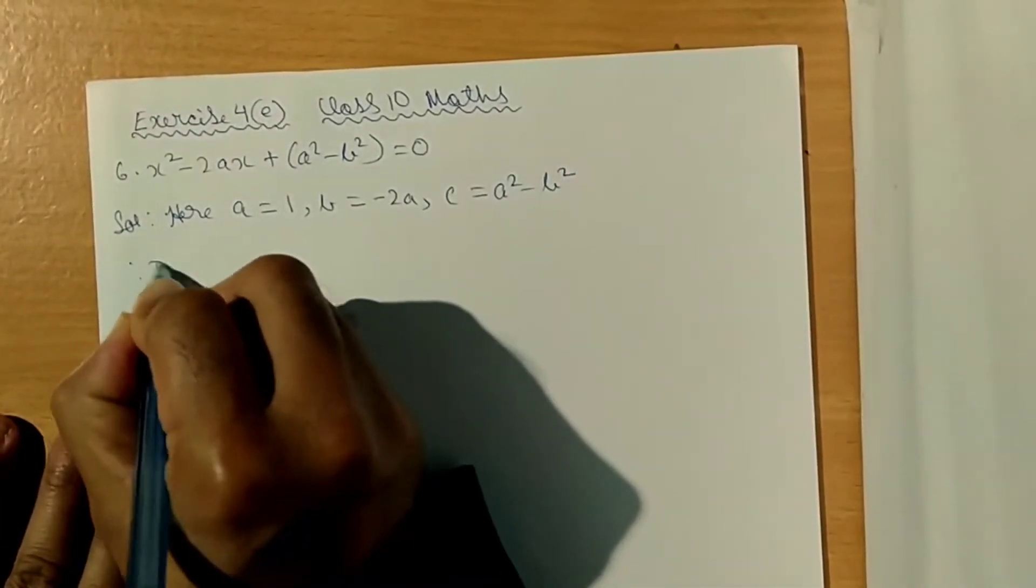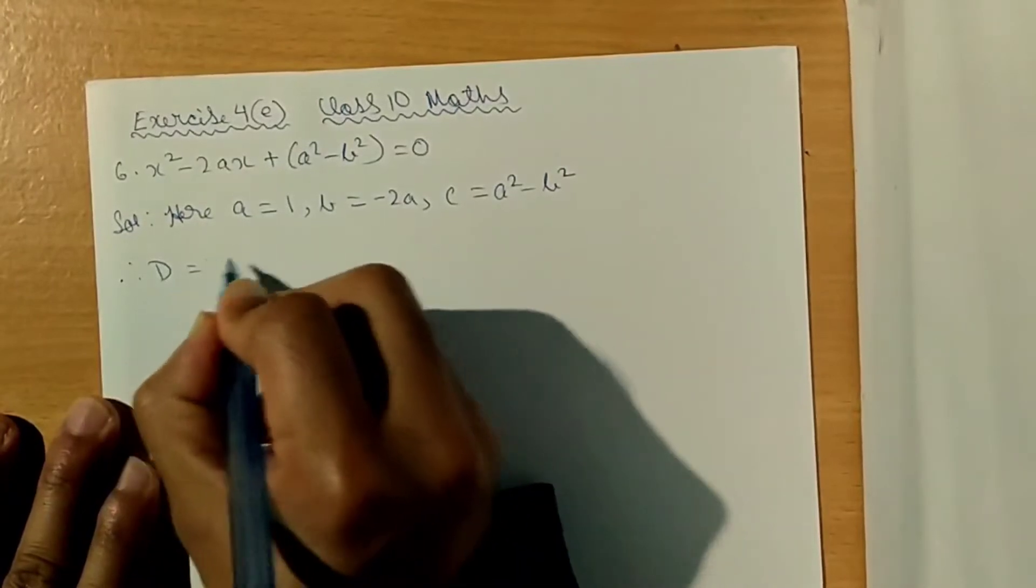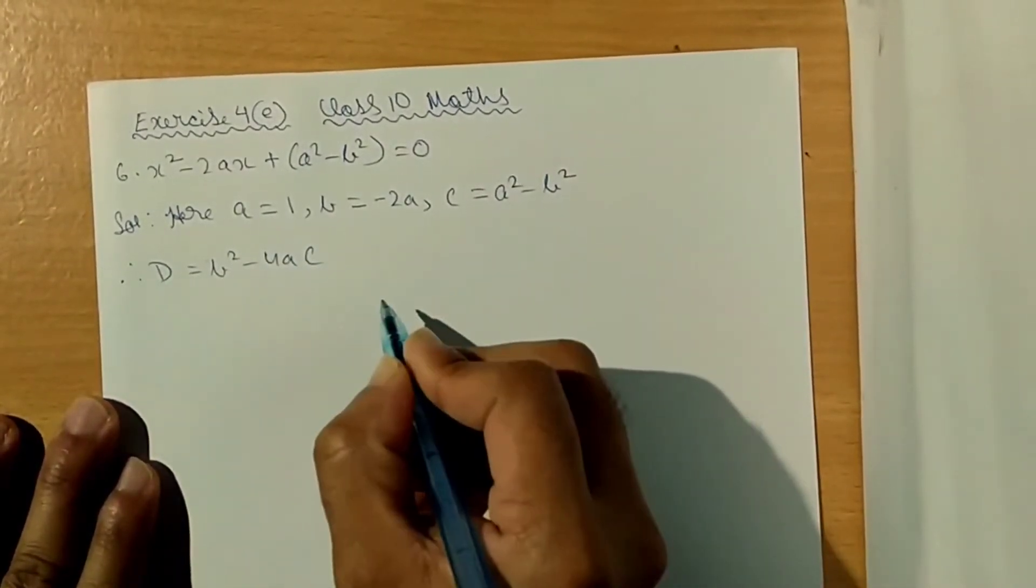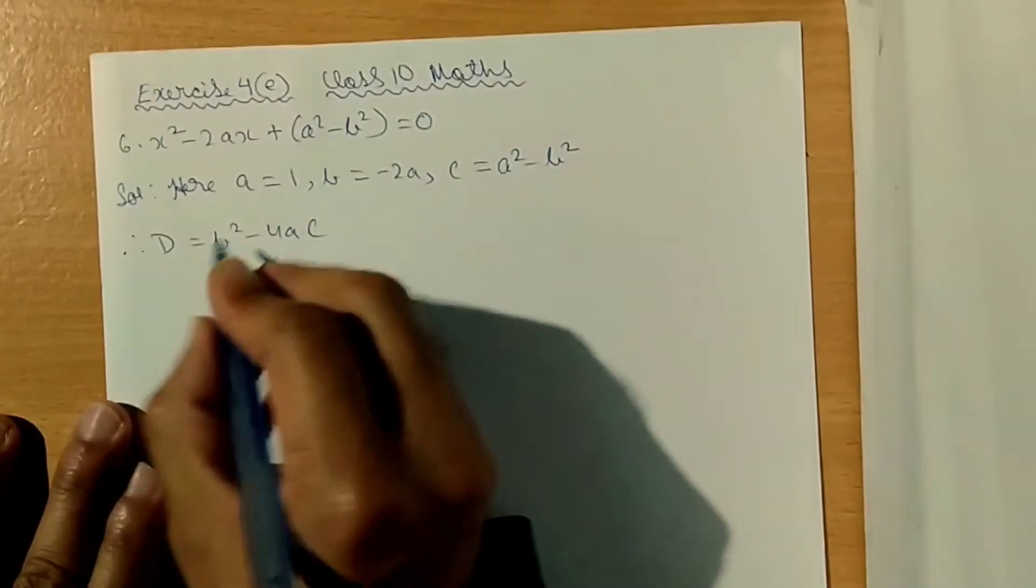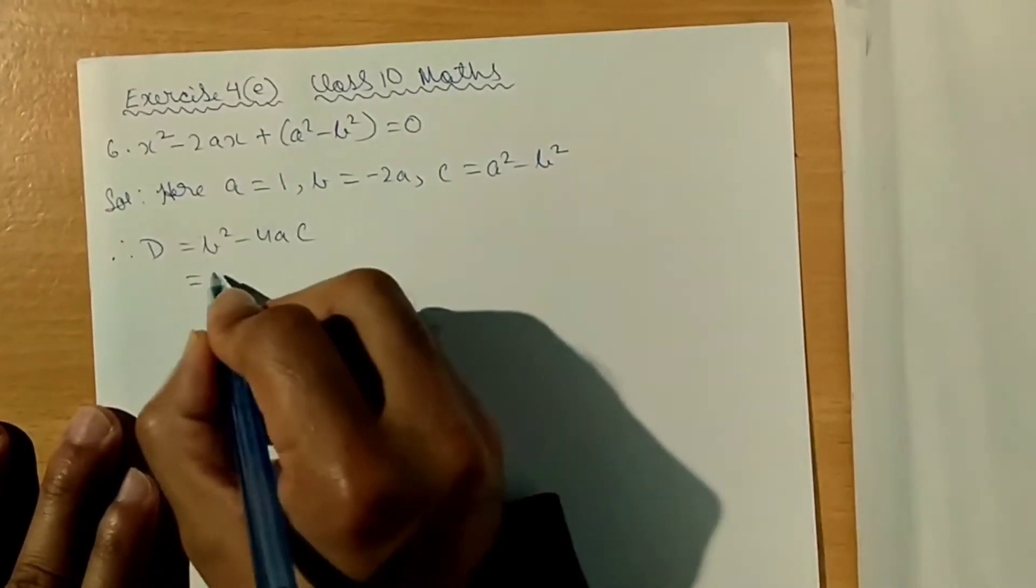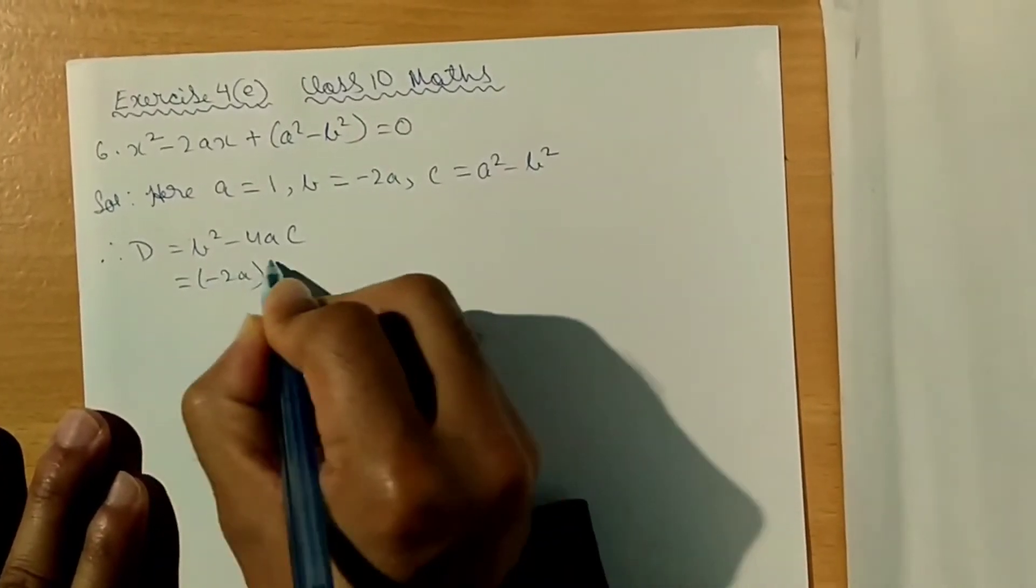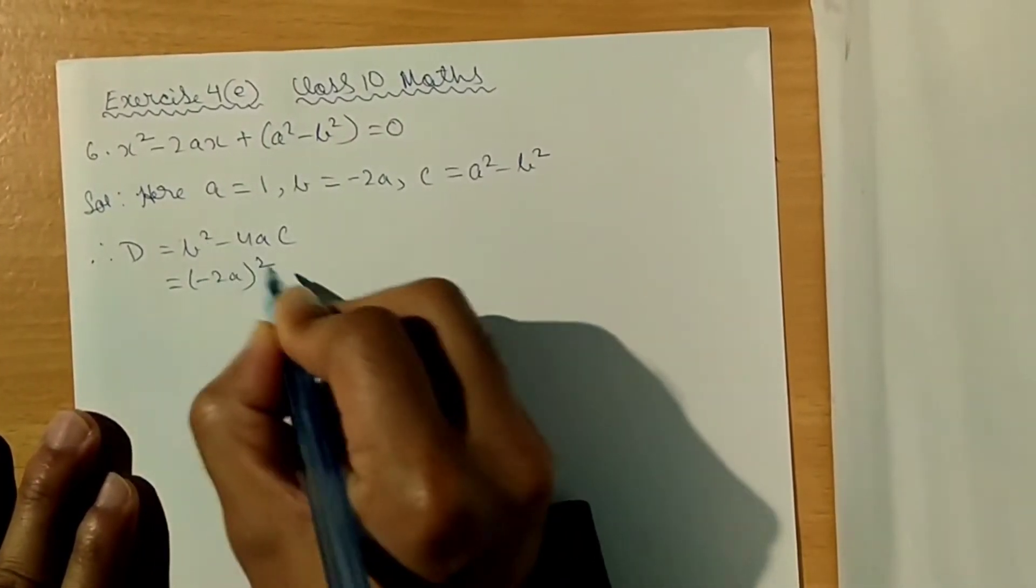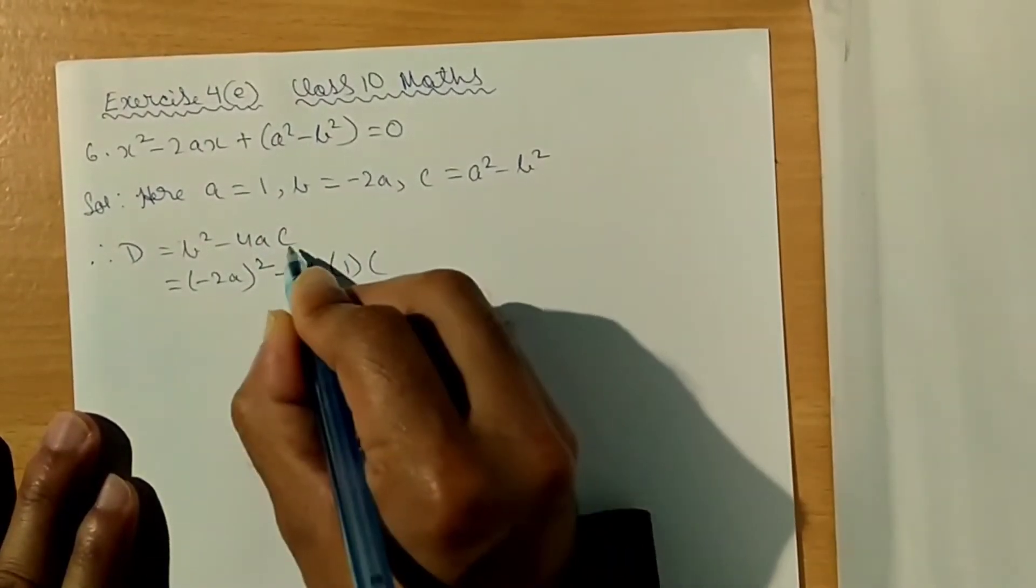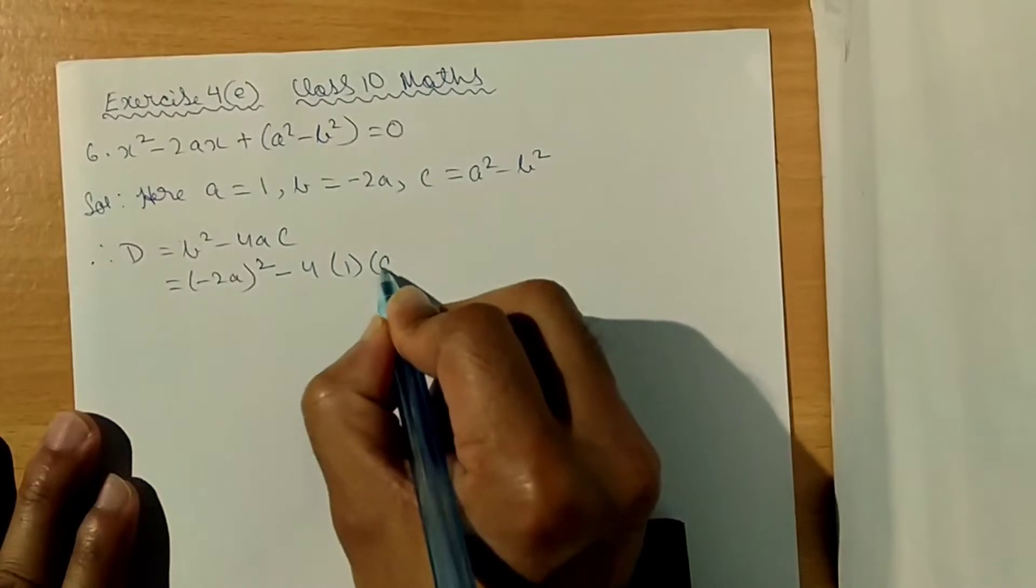Now therefore, discriminant D is equal to B squared minus 4AC. And this is equal to minus 2A whole squared.